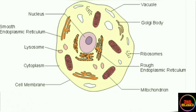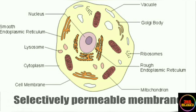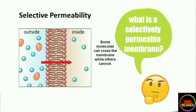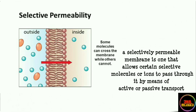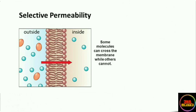These membranes enclosing the cell organelles are selectively permeable membranes. A selectively permeable membrane is one that selectively allows the passage or entry of certain molecules in and out of it — it allows only selective molecules to pass through, hence its name.